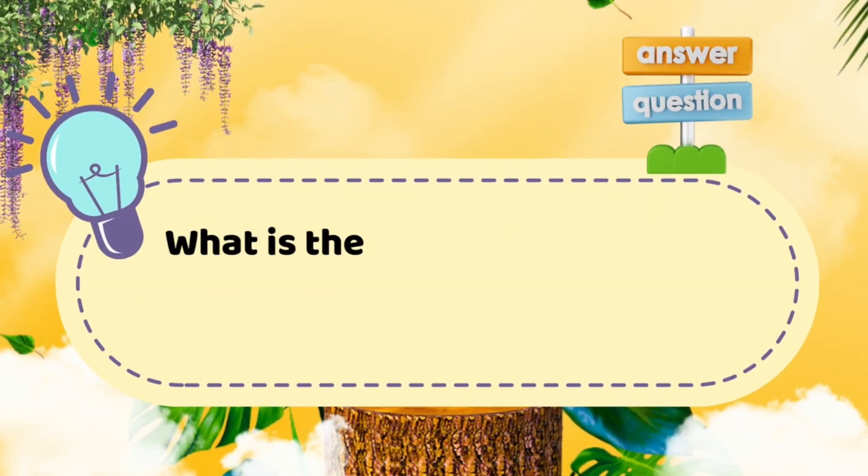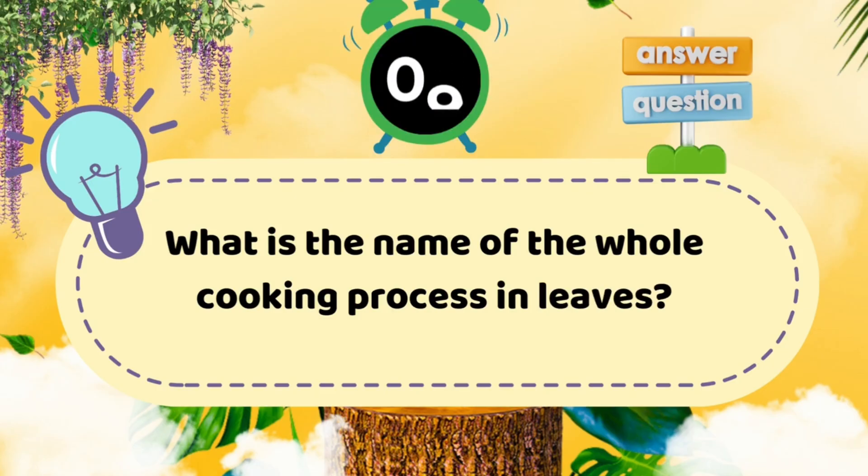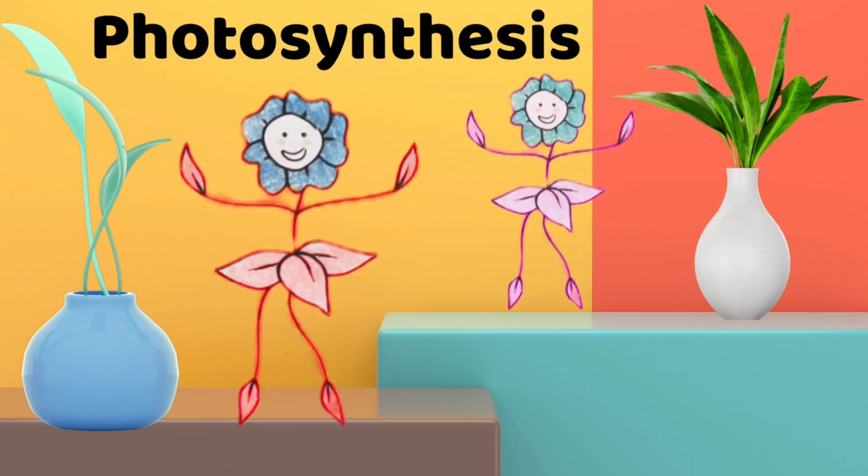Question seven: What is the name of the whole cooking process in leaves? Answer: photosynthesis. Excellent, you remembered the magic word.